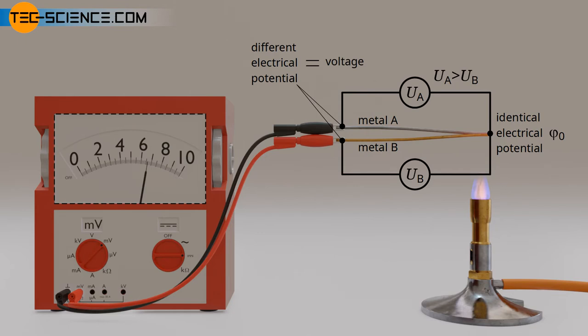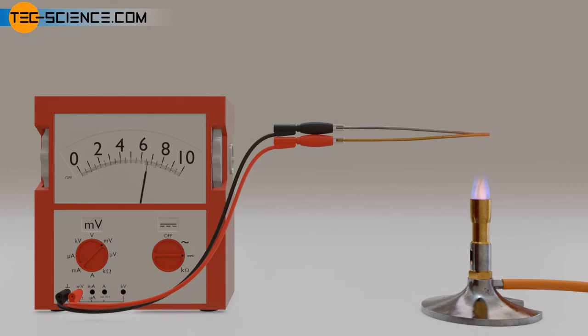This electrical voltage can also be explained as follows. The diffusion of electrons from the measuring point to the reference point due to the temperature gradient is much more intense with iron. Thus more electrons will accumulate there than at the end of the copper wire. This leads to a charge imbalance between the wire ends at the reference junction.